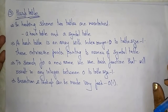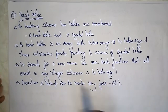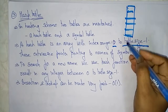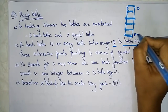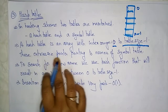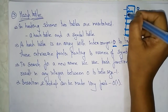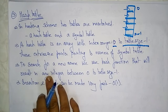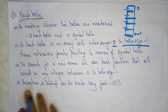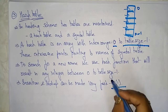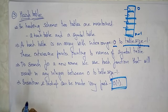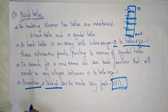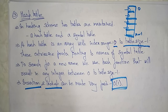The next data structure is the hash table, which is the most commonly used symbol table. In a hashing scheme, two tables are maintained: a hash table and the symbol table. The hash table is an array with index 0 to table-size minus 1, and its entries are pointers pointing to names in the symbol table. To search for a name, we use hash functions that result in an integer between 0 and table-size minus 1. Insertion and lookup can be made very fast, giving a time complexity of O(1). These are the different data structures used in the symbol table.